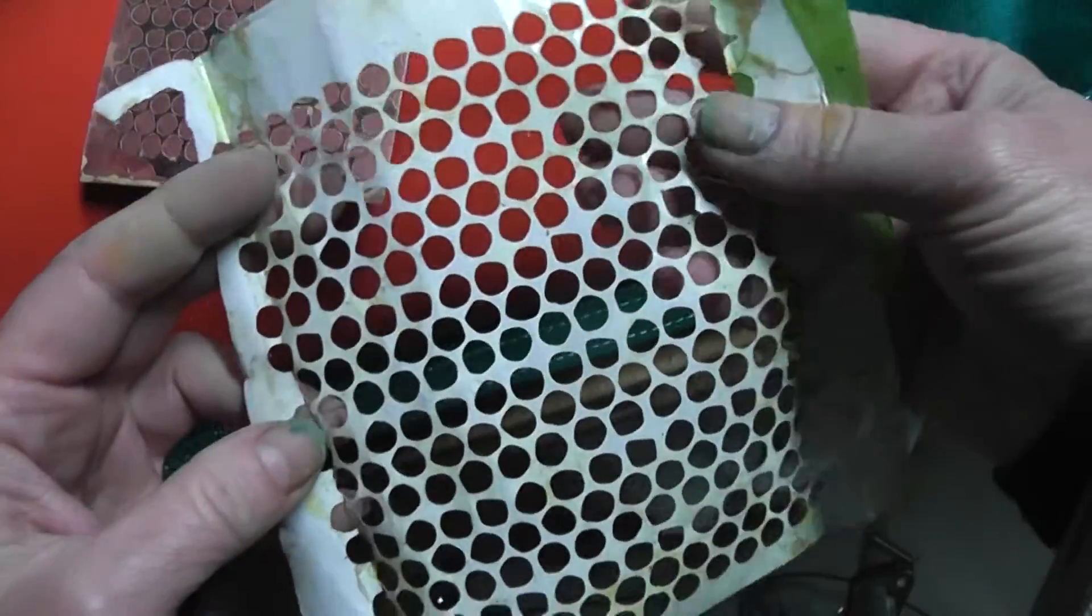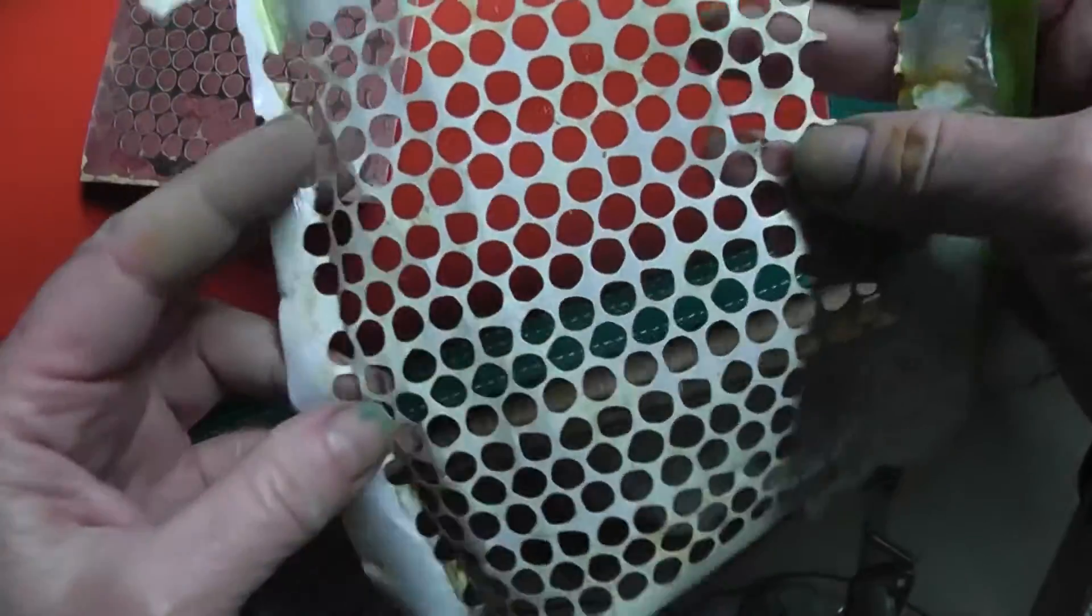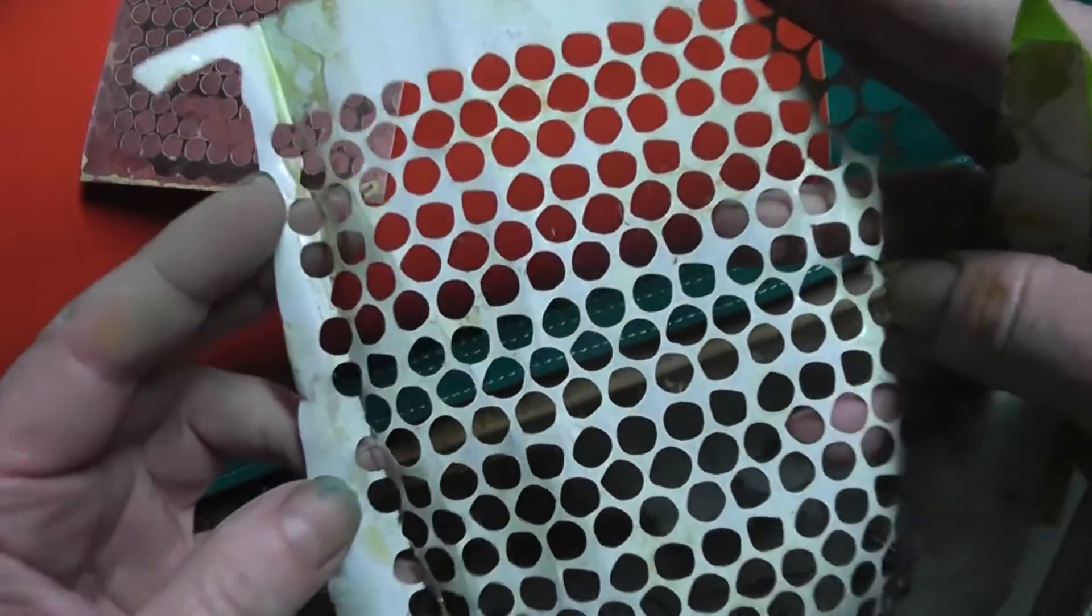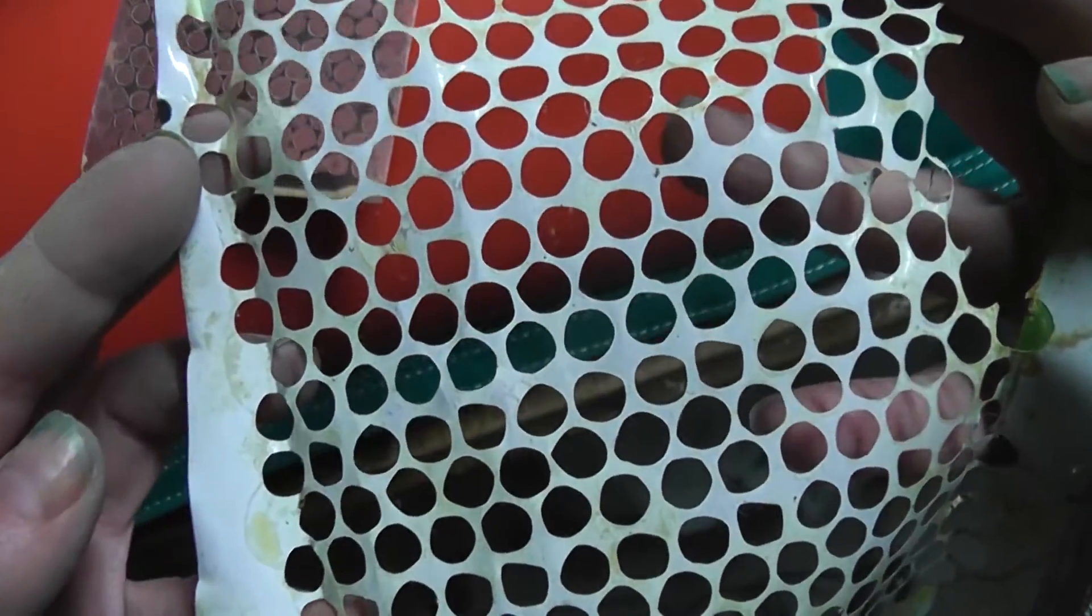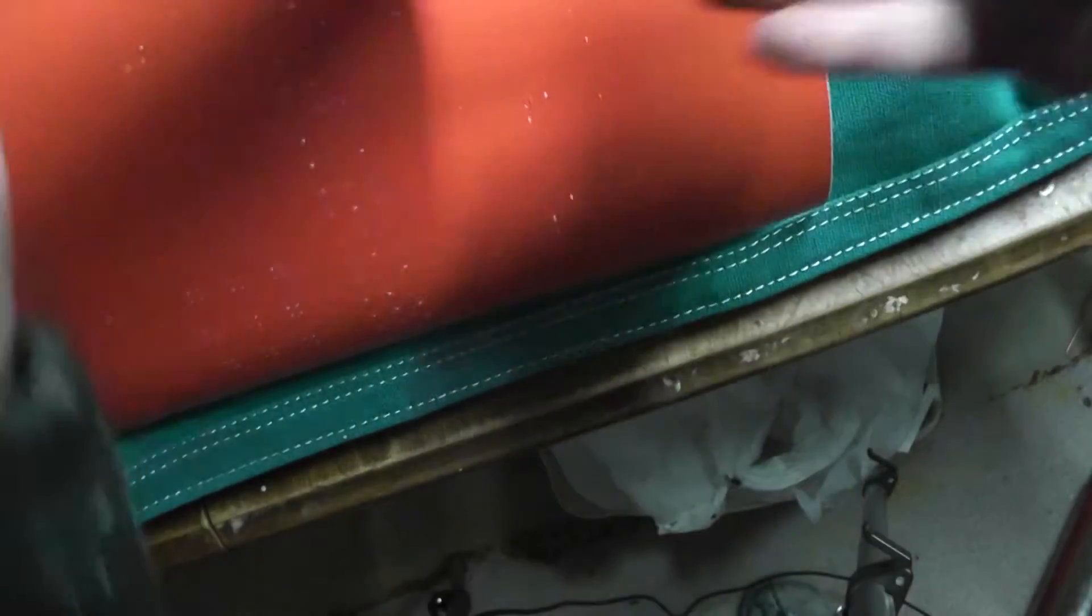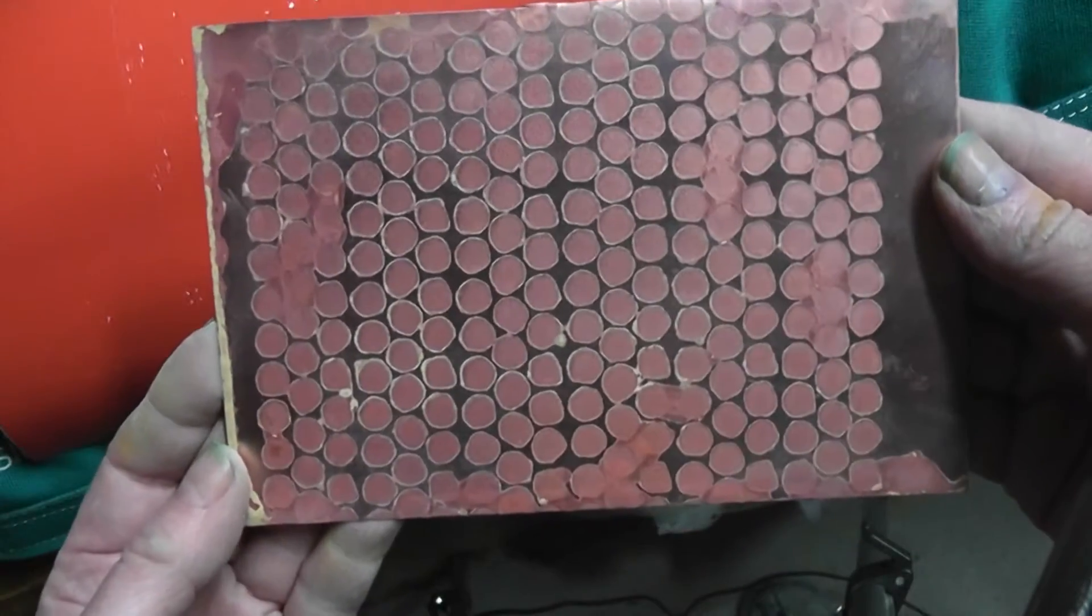So I may use that, like I said, to stencil on either ink or nail polish or something to try to do the reverse on another piece of copper. So anyway, thanks for joining me, and we'll see you next time.